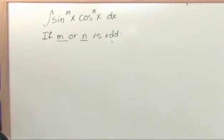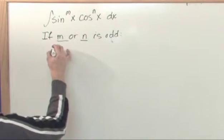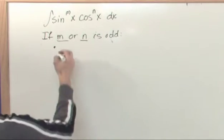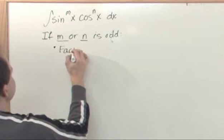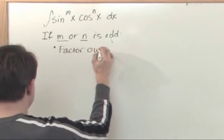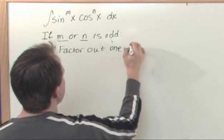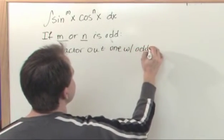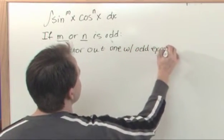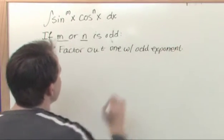If they're odd, then here's what you're in general going to do. This is just an in general kind of thing. You're going to factor out the one with the odd exponent. We're going to get problems to show you what I mean by that.